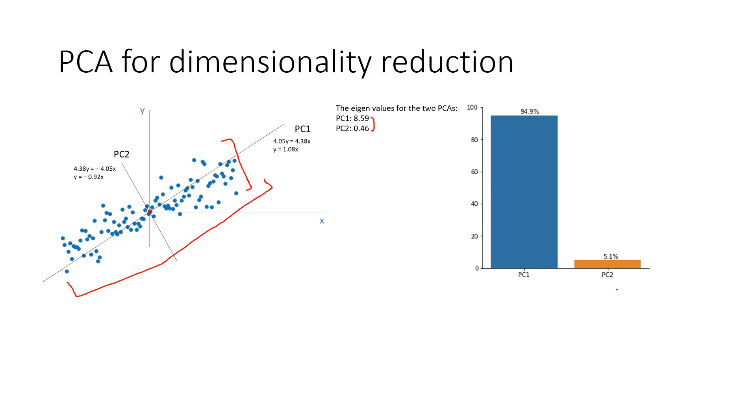You can see, even if we just neglect the second dimension, and if we project all of these points onto this particular axis of PC1, like this, if we just draw the projections of all of these points, even then we will have captured 95% of the information, and we will be losing only around 5% of the information.